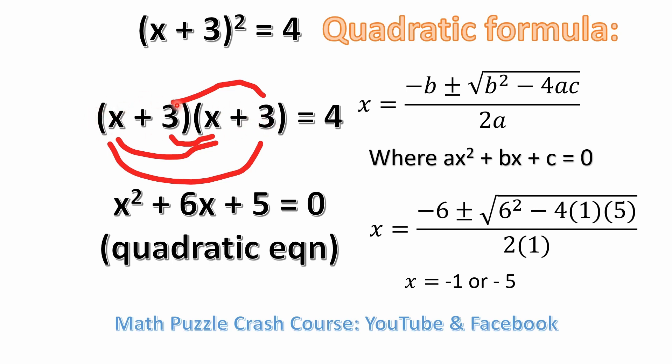So what you could do here is you can set that equal to 4. And then if you multiply this out as a quadratic equation, you have x times x, which gives you x squared.